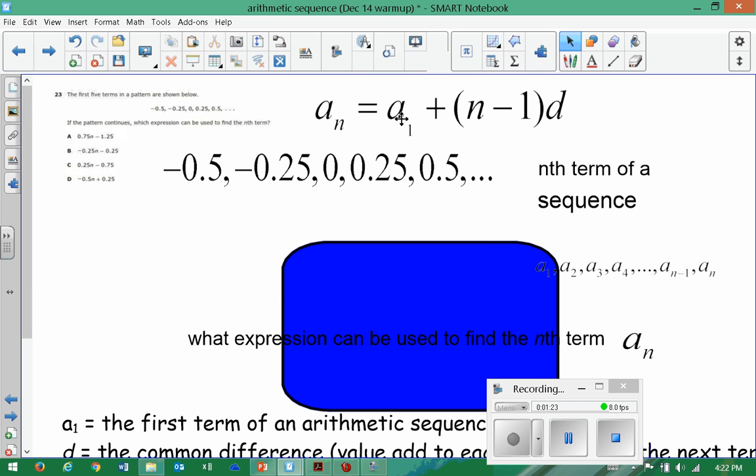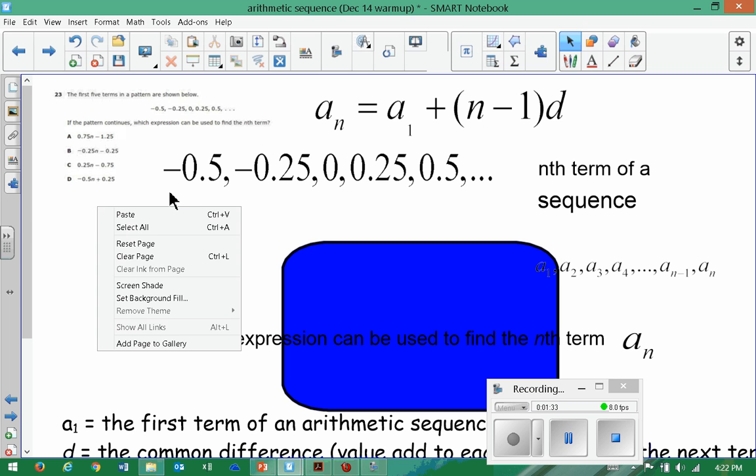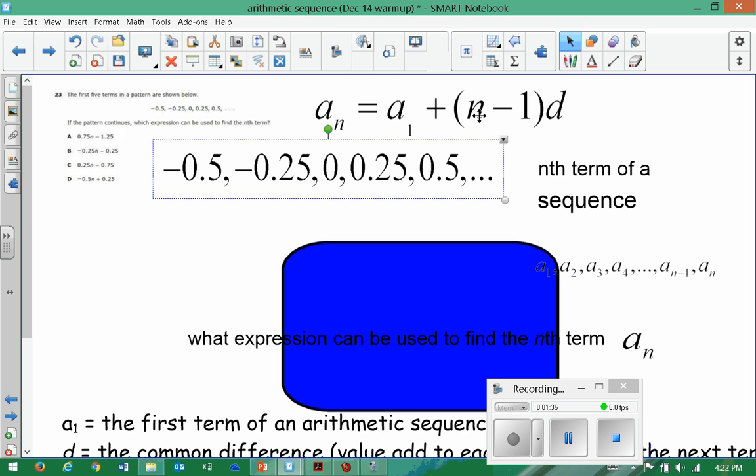A sub one would be the first term. In this case, A sub one will be negative 0.5. Let's go ahead and do that. So A sub one, just using this. And then n, of course, is whatever we want to find. It's the n that corresponds to the nth term. We'll just leave it in for now. And then there's something called d, which is the common difference.